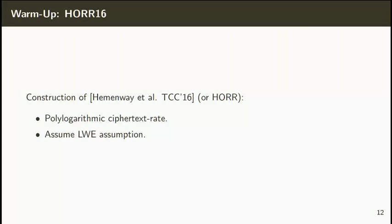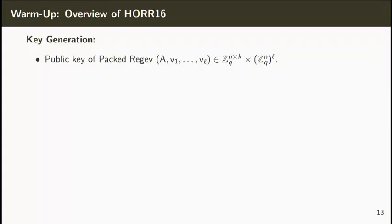Before presenting our construction, let me recap the construction of Hemenway et al., or HORR, which achieves polylogarithmic ciphertext rate from the LWE assumption. The key generation algorithm of HORR starts by generating a public key of the packed REGEV scheme, composed by a matrix A and vectors VI. A random subset of these vectors is created together with a trapdoor. The remaining ones are chosen uniformly at random.